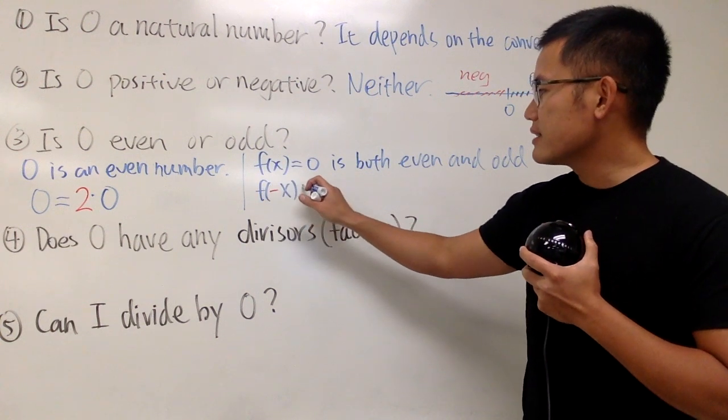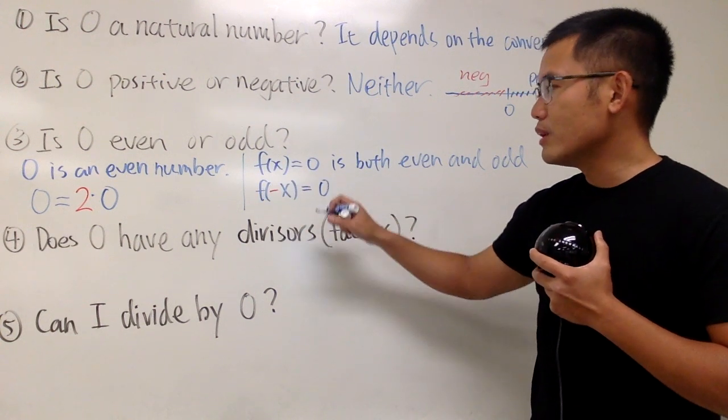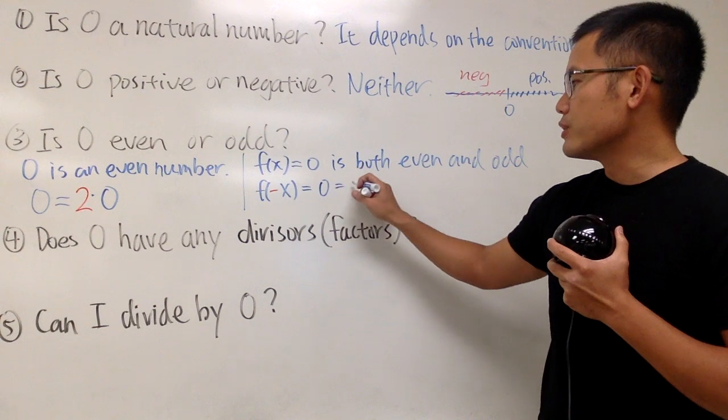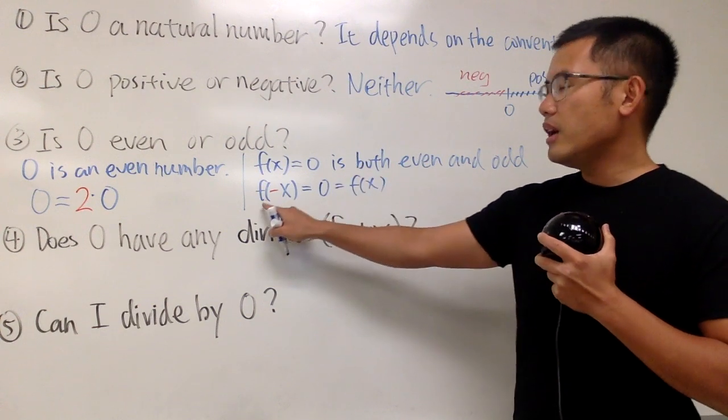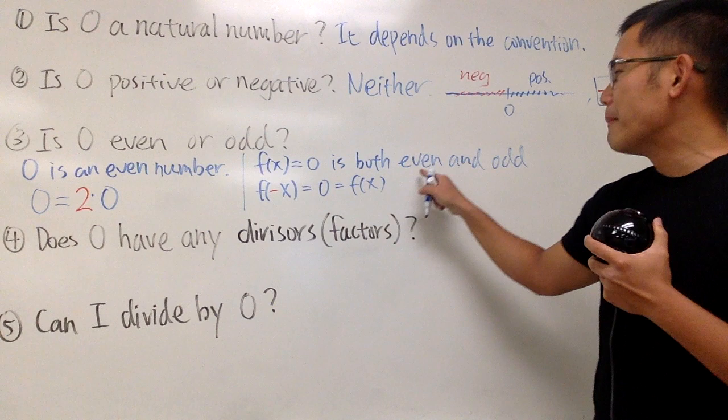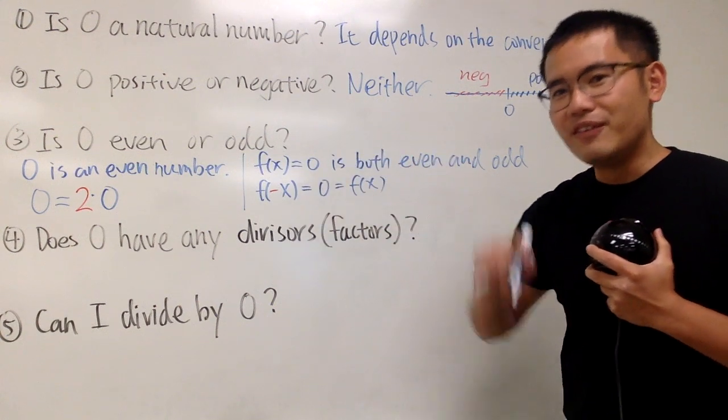So when you have f of negative x, this right here is equal to 0, and that's the same as the original. See? f of negative x is equal to f of x, so that makes this an even function.